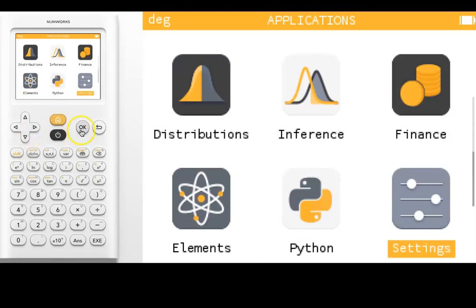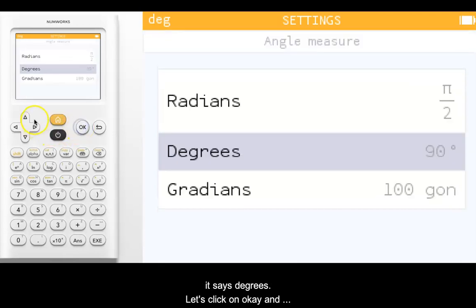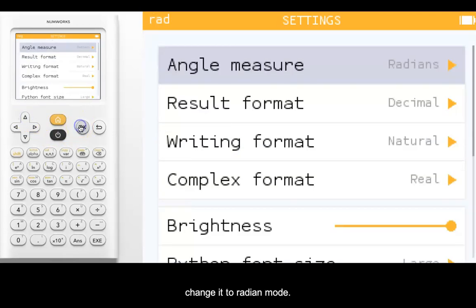We'll come down here to settings, click on OK, and notice where it says angle measure it says degrees. Let's click on OK and change that to radian mode.